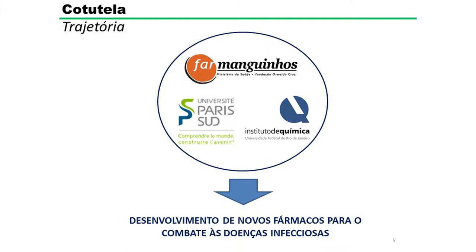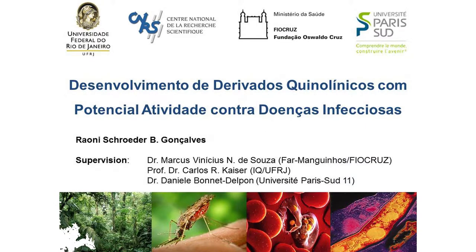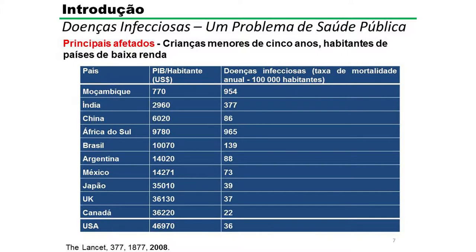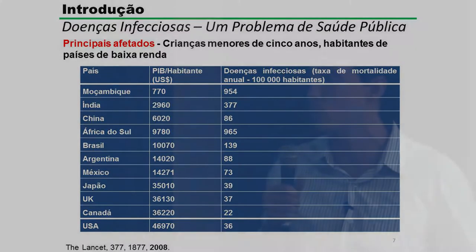Já dando início ao tema da minha tese, doenças infecciosas são enfermidades causadas por micro-organismos patogênicos, como vírus, parasitas, bactérias e fungos, e elas podem ser transmitidas direta ou indiretamente de uma pessoa a outra. Essas doenças são responsáveis por 25% das 57 milhões de mortes anuais, e ocupam o segundo lugar no ranking das principais causas de morte, perdendo apenas para as doenças cardiovasculares. Os principais afetados são crianças menores de 5 anos que habitam países de baixa renda, e aqui na tabela a gente pode ver a relação inversamente proporcional do PIB e da taxa de mortalidade por doenças infecciosas — realmente são doenças de países pobres.